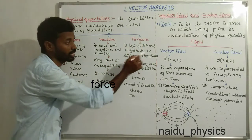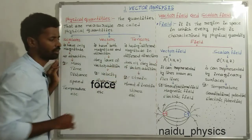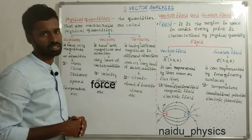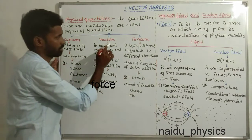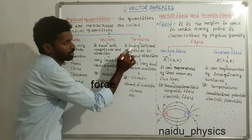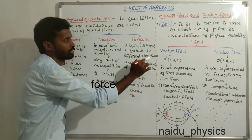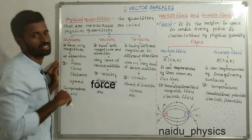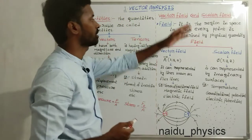Next, tensors. Tensors have different magnitudes in different directions, and do not obey vector addition laws. Examples include moment of inertia and stress. The main difference between vectors and tensors: tensors have different magnitudes in different directions, whereas vectors have constant magnitude in different directions.